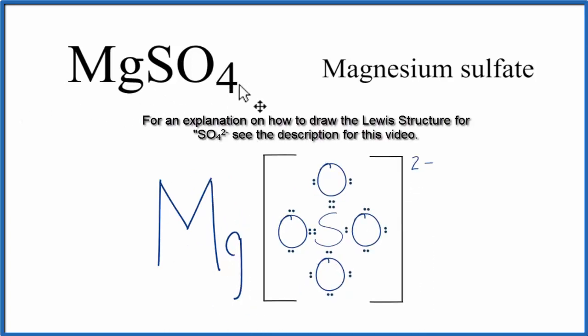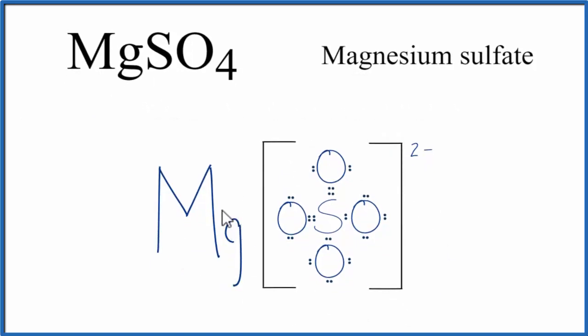MgSO4 is an ionic compound. We go to the periodic table and see magnesium here. It's in group 2, so it has two valence electrons, and it'll transfer both of them to the SO4.